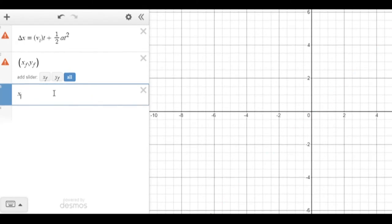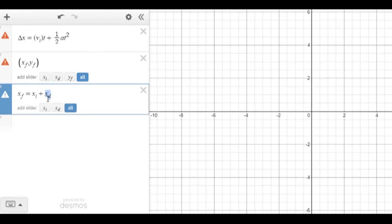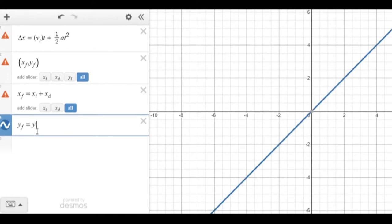So x sub-final should be the same thing as the initial x position plus change in x. And again, we can't do delta, so I'm just going to do x sub-t to denote change in x. And similarly for y, y sub-final should be equivalent to y sub-initial plus change in y.